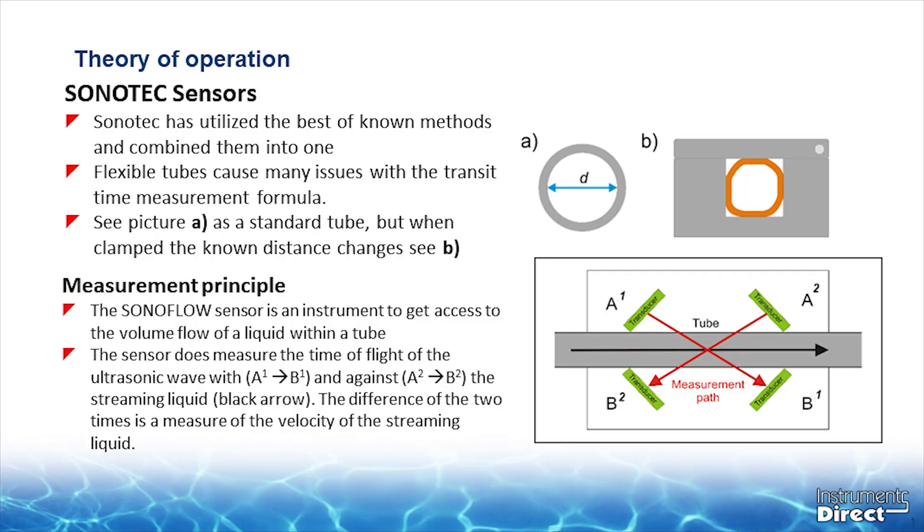The Sonoflow sensor utilizes the ultrasonic transit-time method. This transit-time math equation requires a defined distance across the pipe, or in this case, the flexible tube. Now the problem with a flexible tube is that the shape is not perfectly round or consistent in any way, so the math will not work.